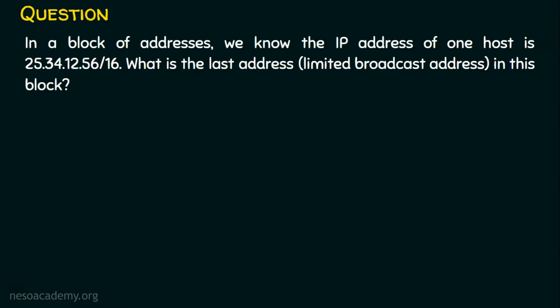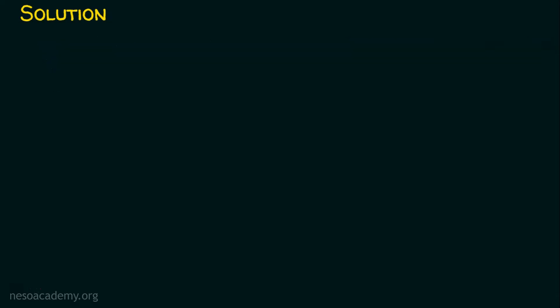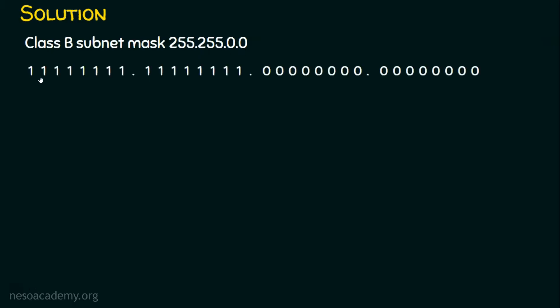Let's solve this first with the reverse engineering method, which we dealt with in the previous case. The reverse engineering method starts with the subnet mask. We know the subnet mask is a class B subnet mask, which is 255.255.0.0. When we convert this subnet mask into binary, we get all ones in the first two octets and all zeros in the next two octets.